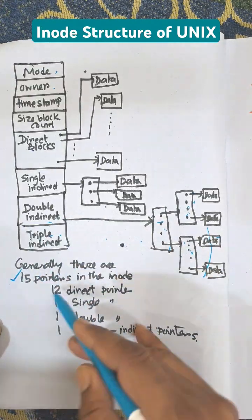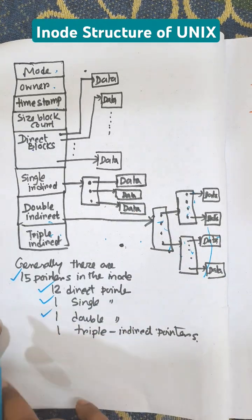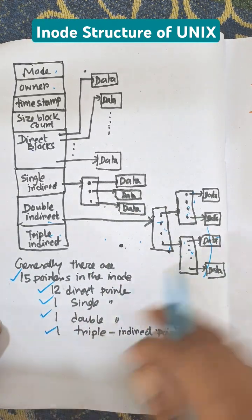Generally, there are 15 pointers: 12 direct pointers, one single indirect, one double indirect, and one triple indirect block.